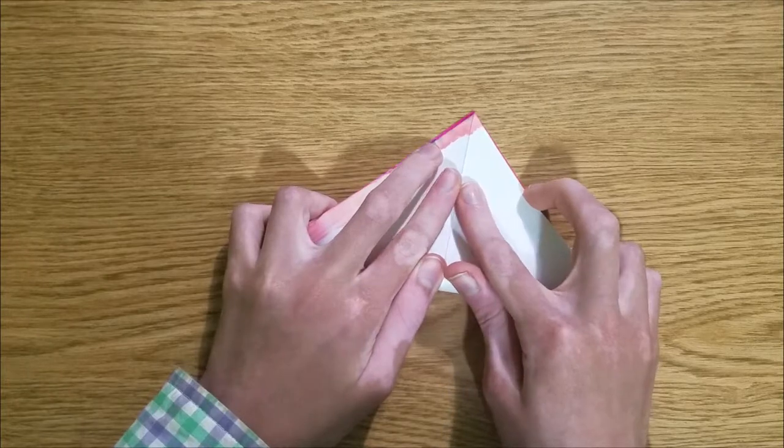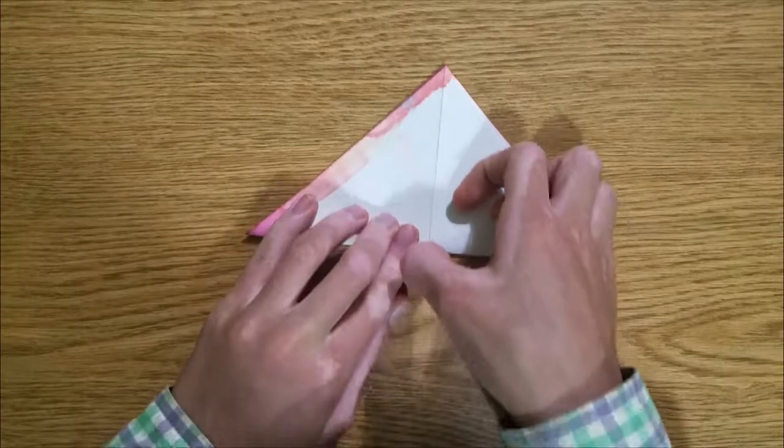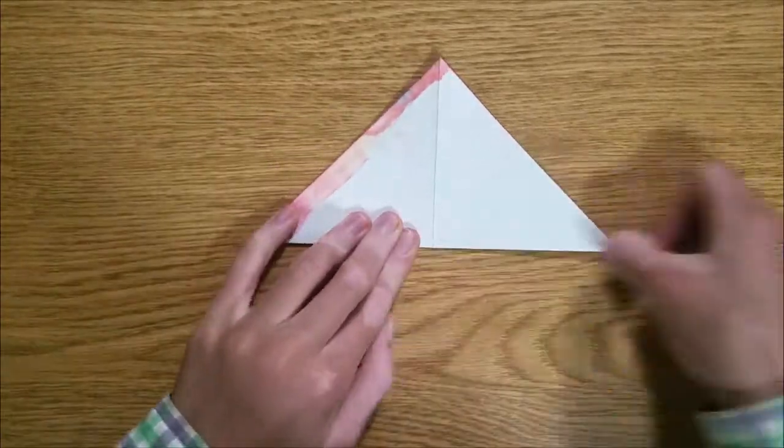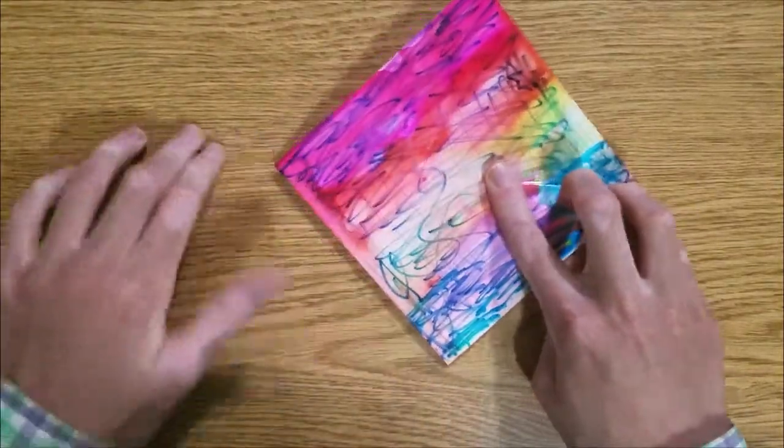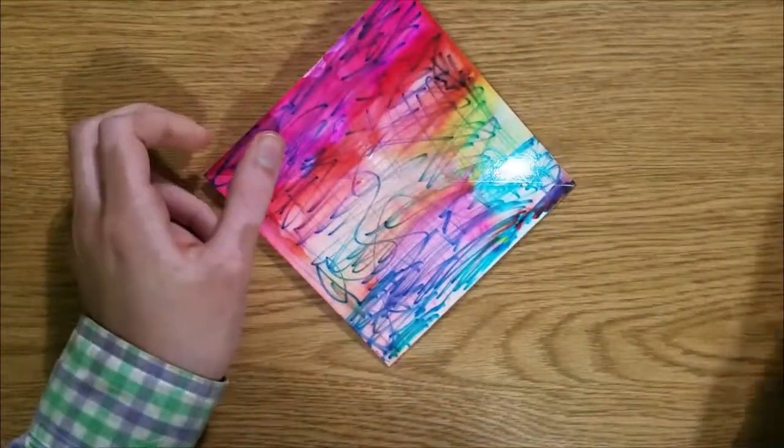So fold both diagonals. I think you can tell that this is thick paper and it kind of squeaks because it's glossy.